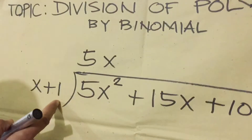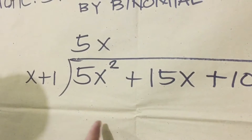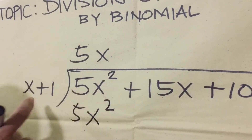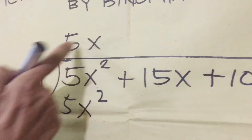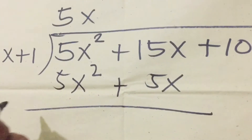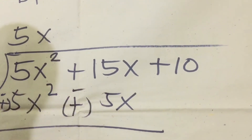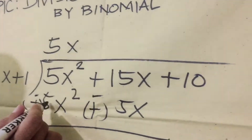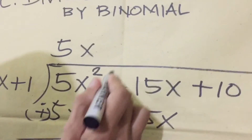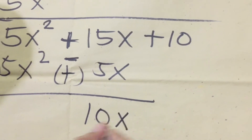For the binomial, we don't include the second term in the estimate — we only use it when we multiply downward. So five x times x equals five x squared. Then we also multiply the second term: five x times one equals positive five x. Then we subtract — we change the sign: positive becomes negative. So five x squared minus five x squared equals zero. Then positive and negative — we need to subtract: fifteen minus five equals ten. Then just bring down x, the variable.